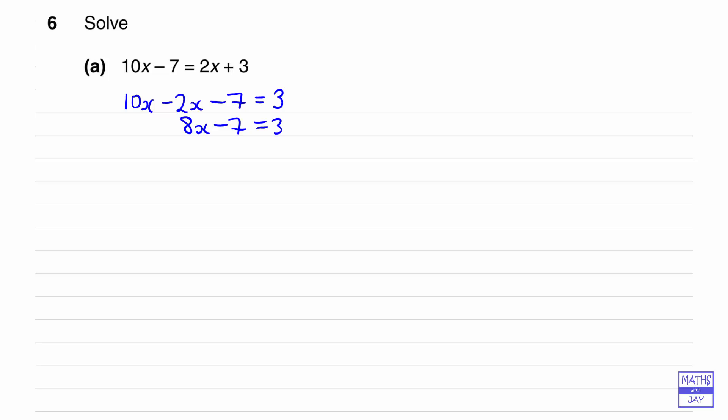So we would just go on and solve this in the usual way. So adding 7 to both sides, we get that 8x is 3 plus 7, so 8x is equal to 10.